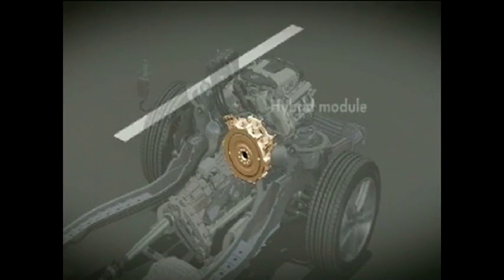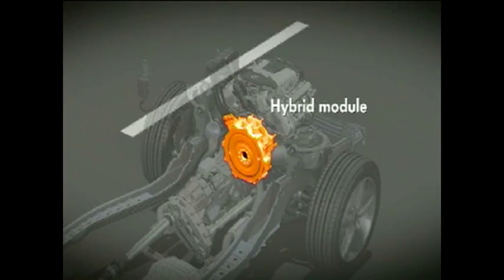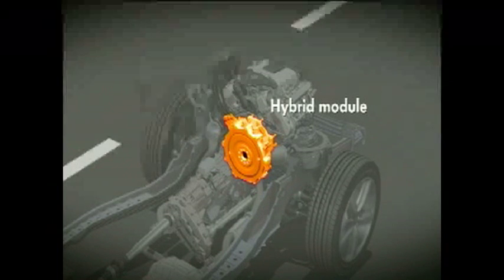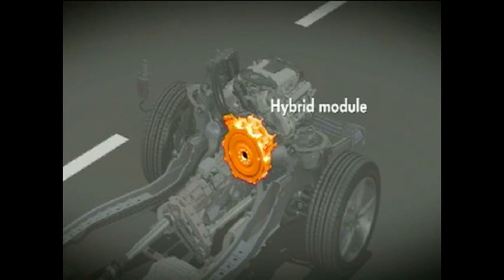At the heart of the drivetrain lies the compact hybrid module. As an integrated sub-assembly, it combines the separating clutch that is crucial to parallel drive with a 34-kilowatt electric motor.